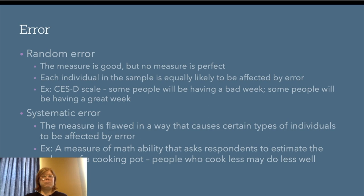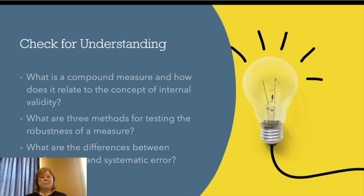Let's take a moment to check for understanding. What is a compound measure and how does it relate to the concept of internal validity? What are three methods we can use to test the robustness of a measure? And what are the differences between random error and systematic error? Take a moment and try to answer these questions in long form, like you're explaining them to someone else.